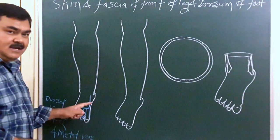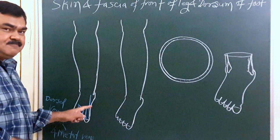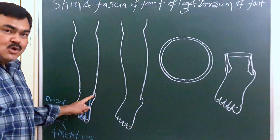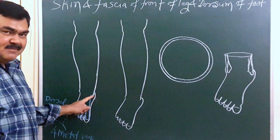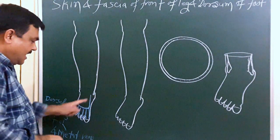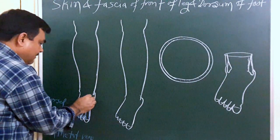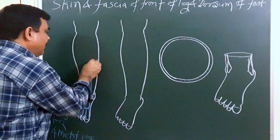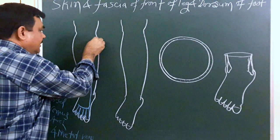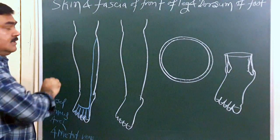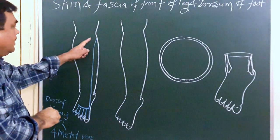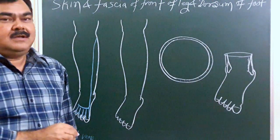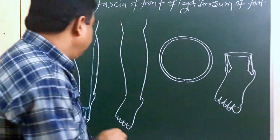This is the great saphenous vein, which passes just anterior to the medial malleolus. This is the medial malleolus — it passes just anterior to the medial malleolus. It then ascends upward, passes behind the knee joint, goes further up, and opens into a deep vein.